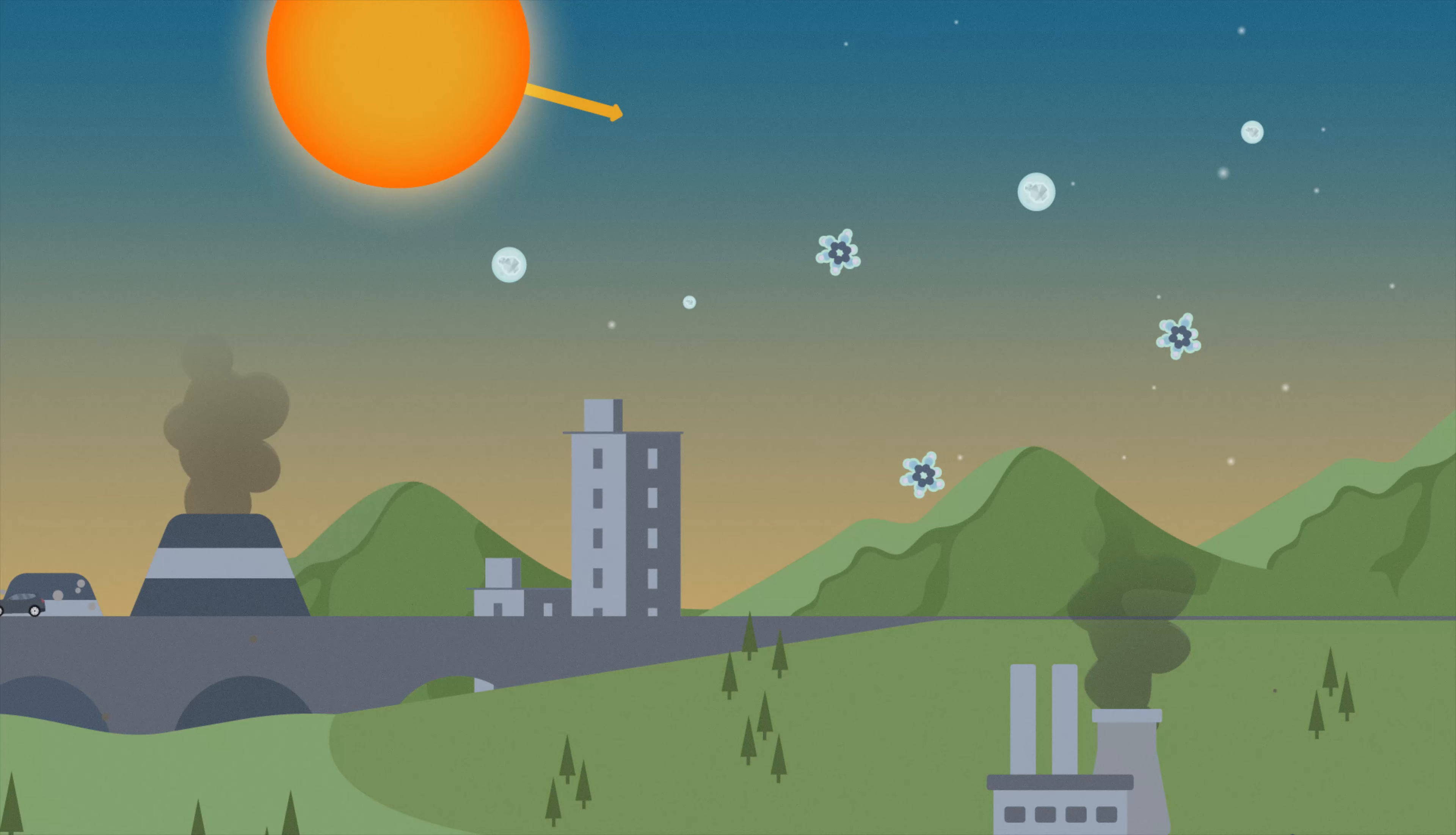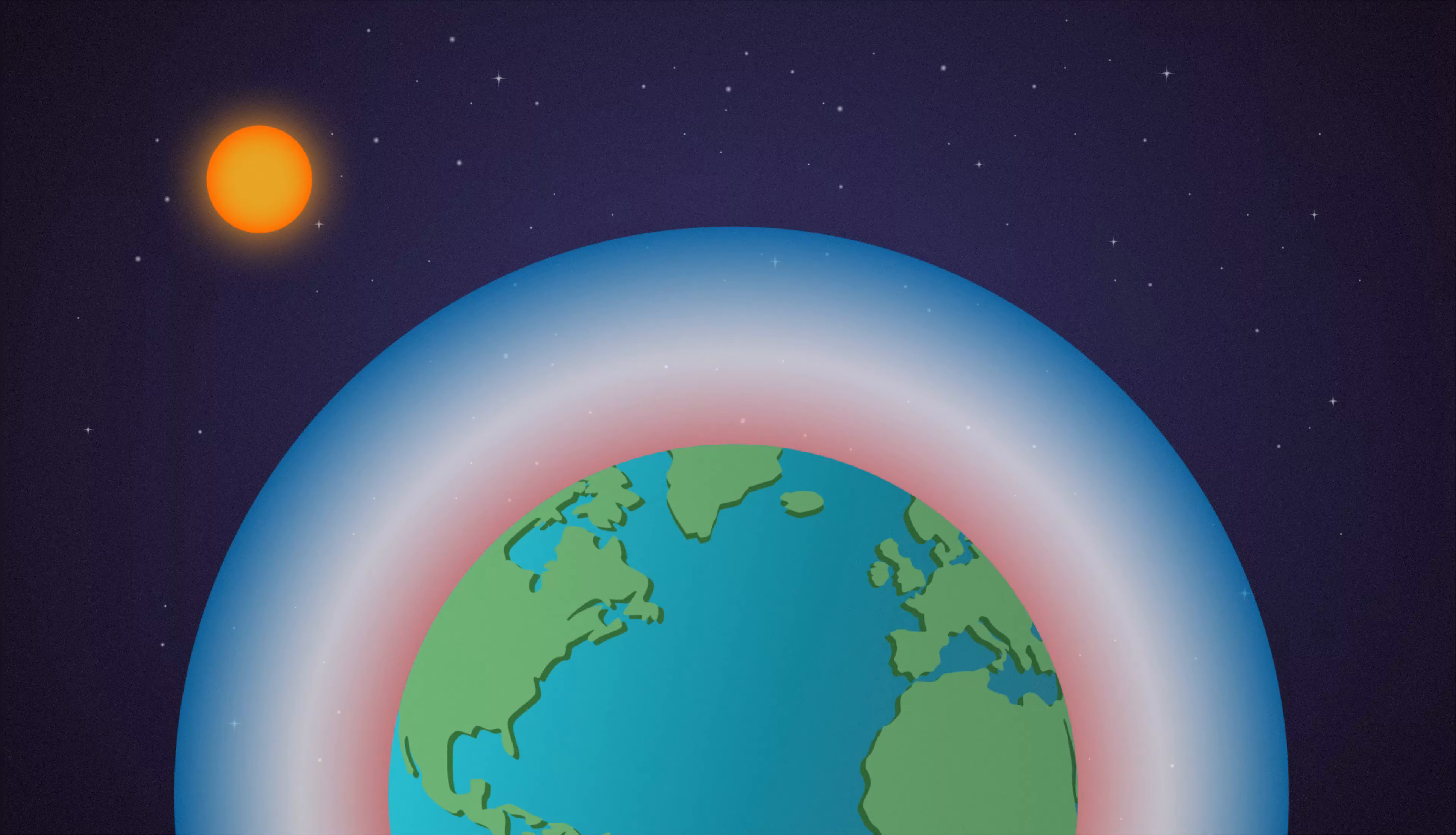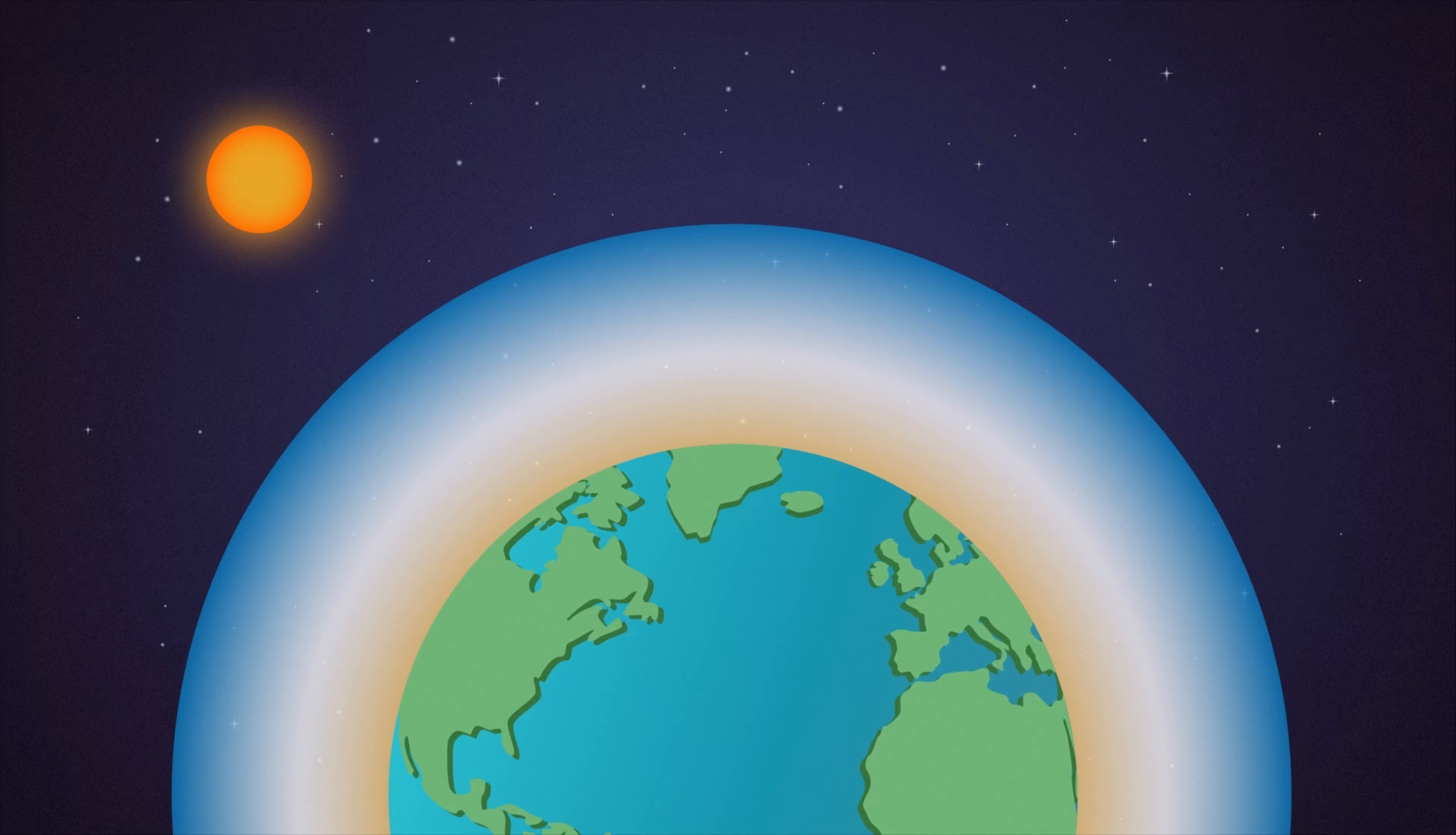But darker aerosols like black carbon from fossil fuel burning absorb light and warm up the planet. Together, the net impact of both types of aerosols have helped cool the planet and countered the warmer temperatures caused by more greenhouse gases.